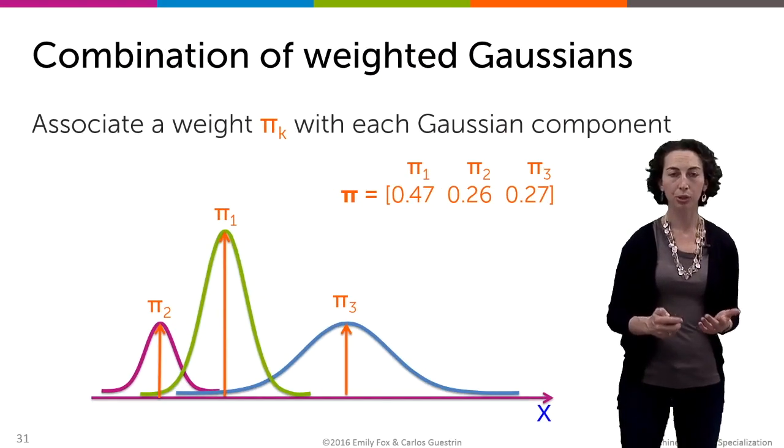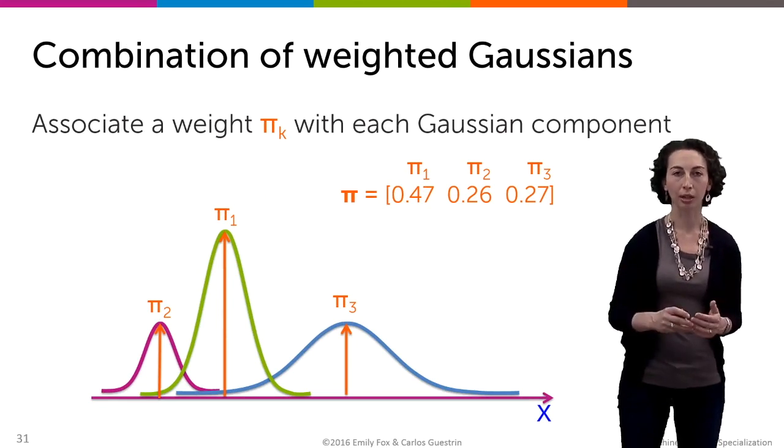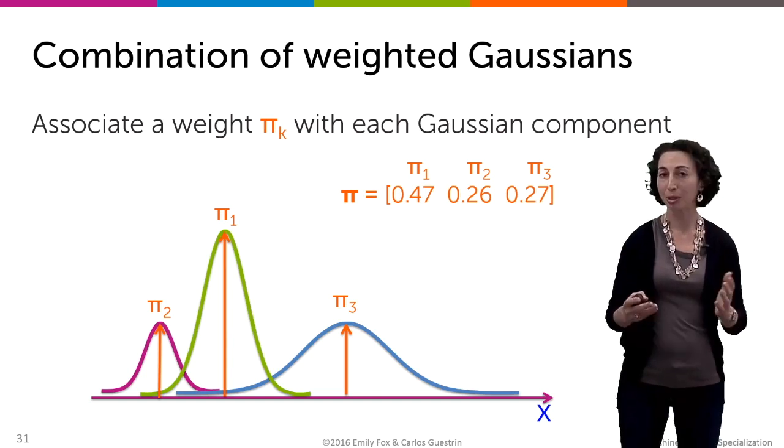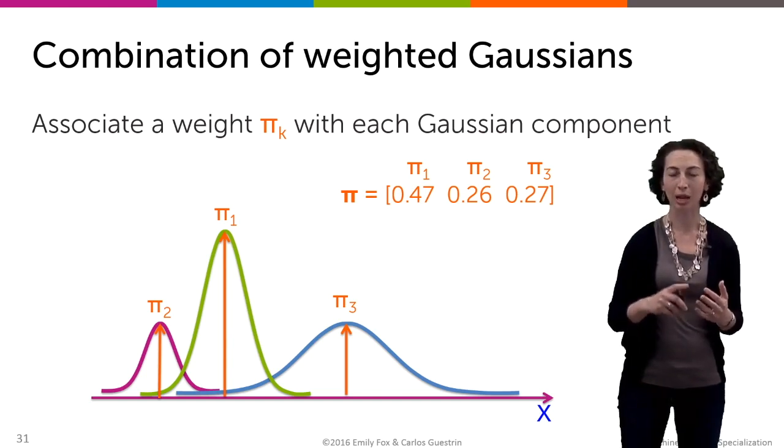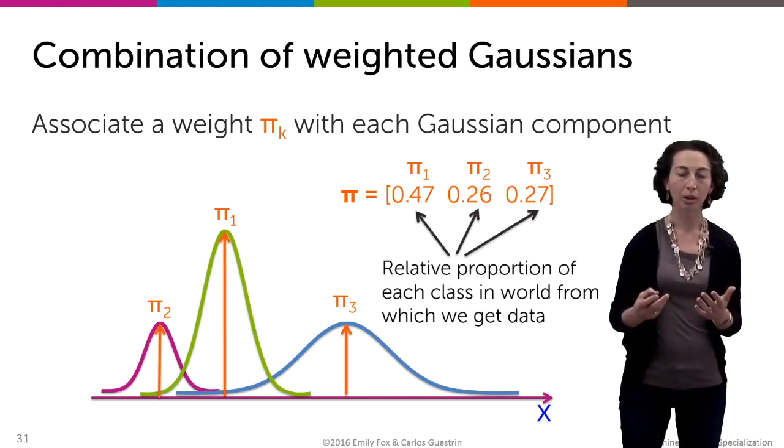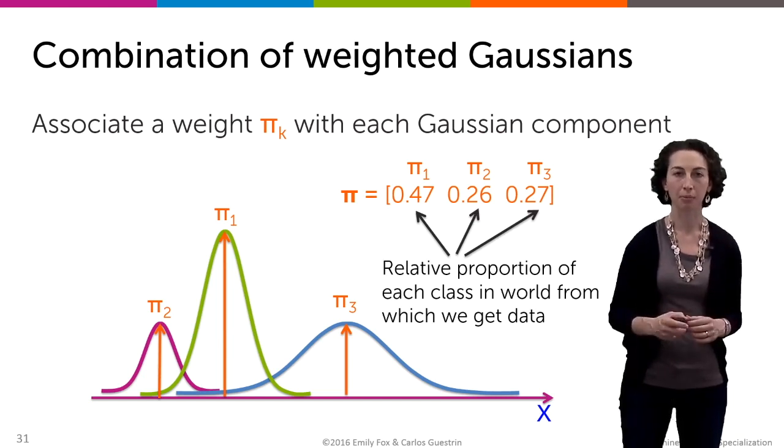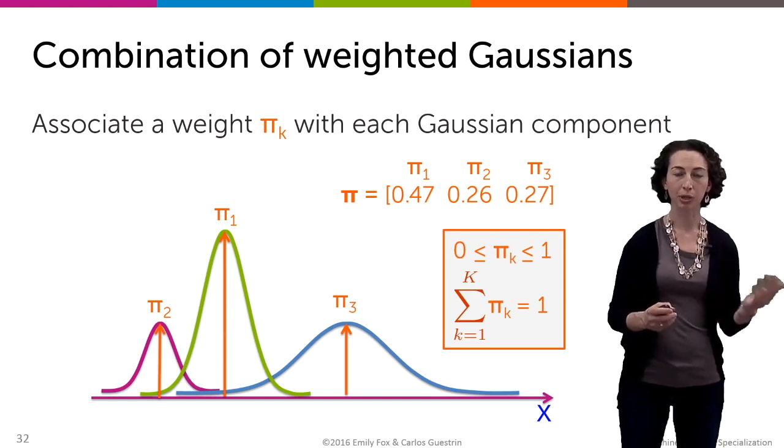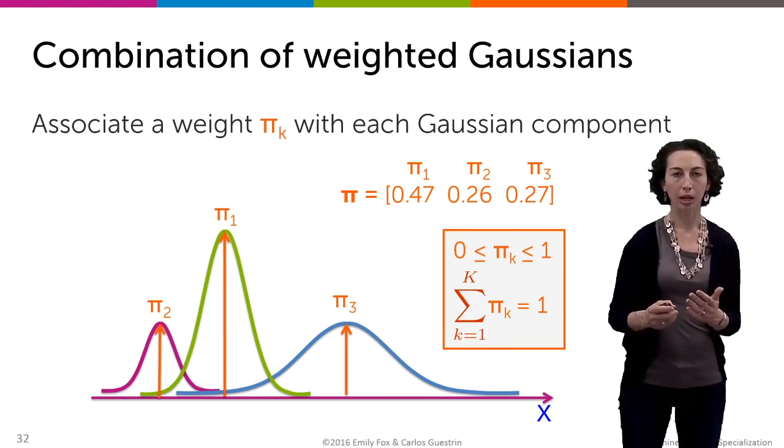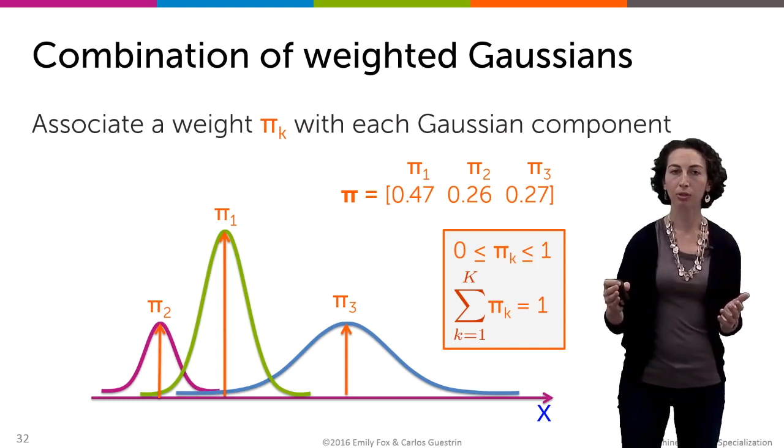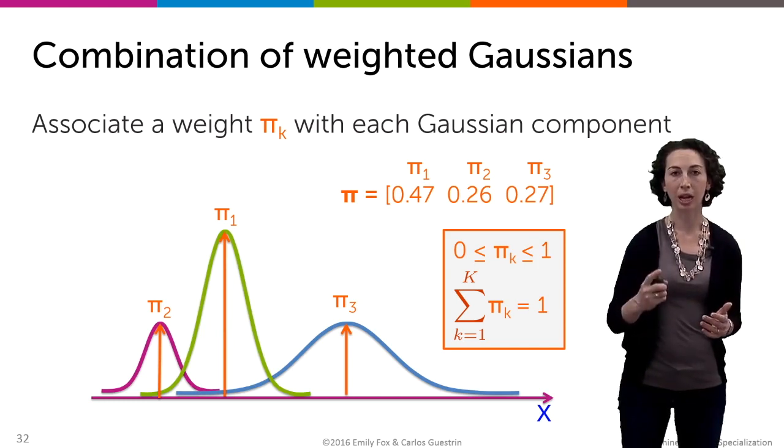More formally, we introduce a set of cluster weights, pi_k, one for each cluster k. In this example where we're going to assume a model with three different clusters, we'd have pi_1, pi_2, and pi_3, where these weights are capturing the relative proportion of these images in our entire data set. Each one of these weights has to live between 0 and 1, and the sum of the weights across each of the clusters has to equal exactly 1.